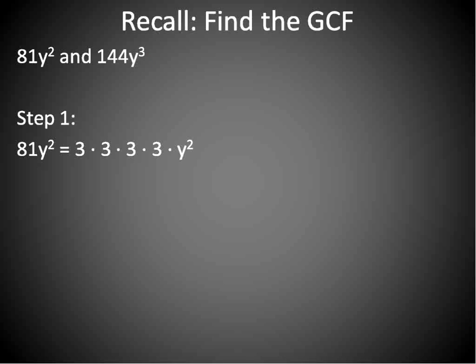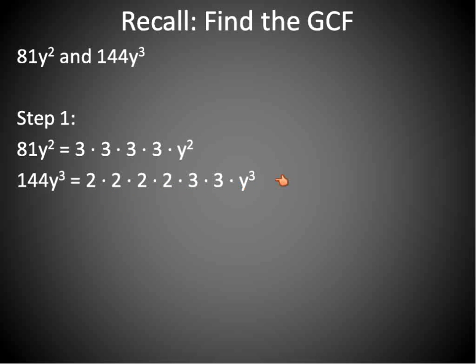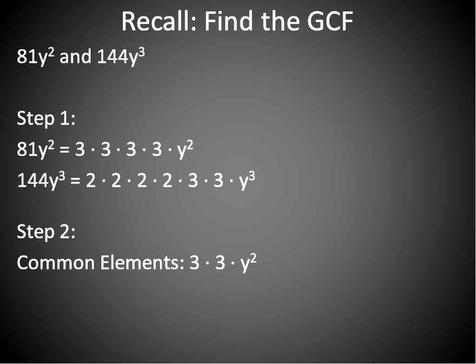Finding the greatest common factor: when you're given two terms like 81y² and 144y³, to find the greatest common factor we will list the prime factors. 81y² is 3 × 3 × 3 × 3 × y². That's the prime factorization. And 144y³ is 2 × 2 × 2 × 2 × 2 × 3 × 3 × y³. We then identify which prime factors are common between them — 3 × 3 × y² — so our greatest common factor is 9y².